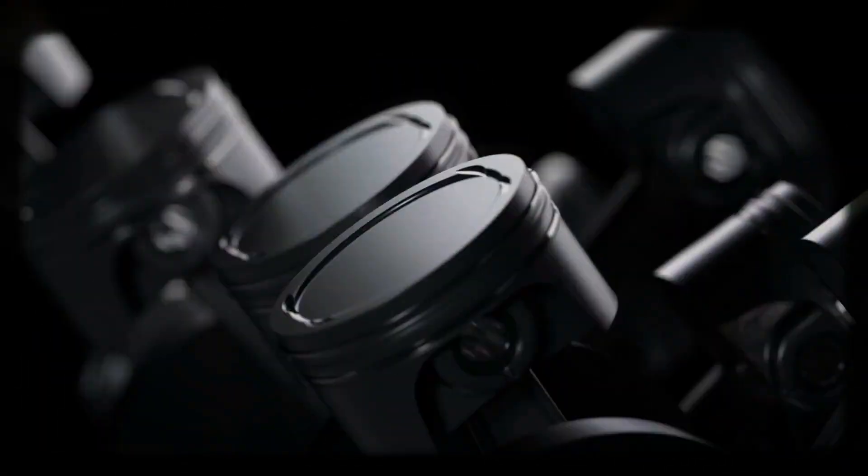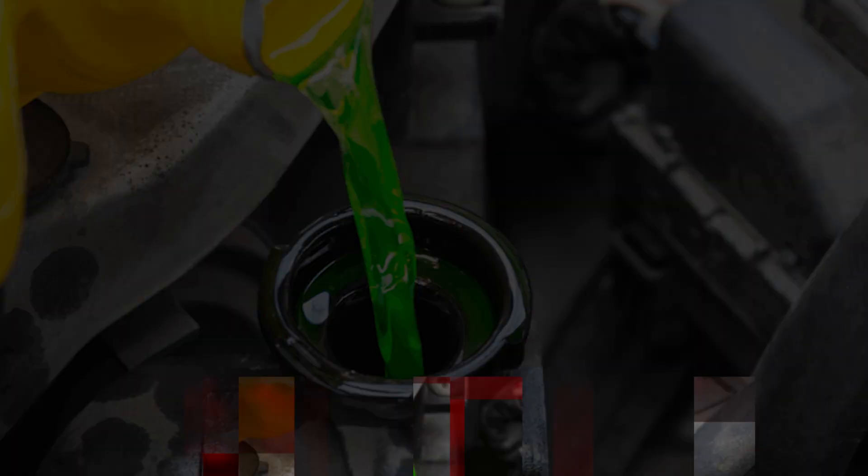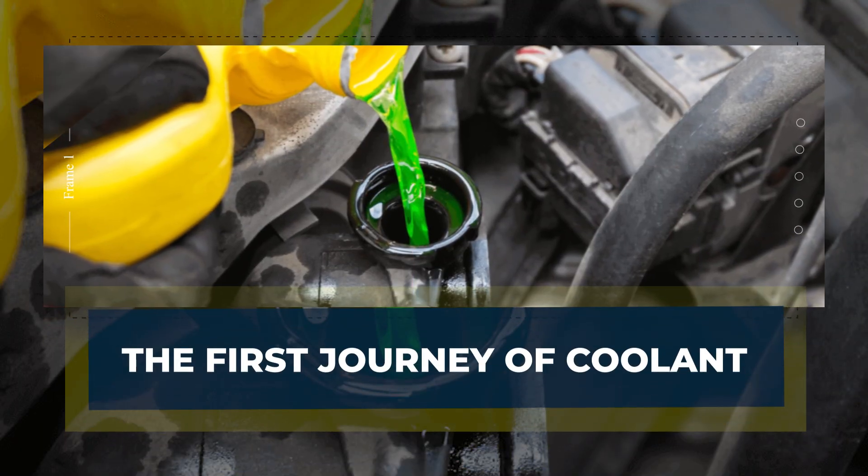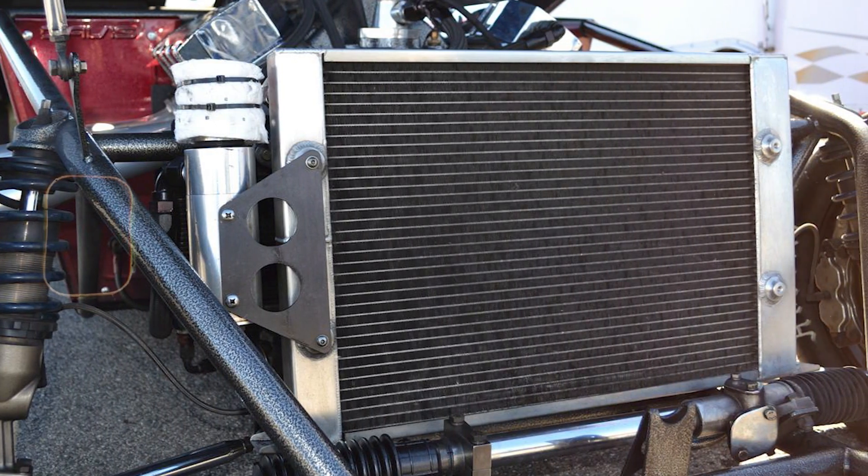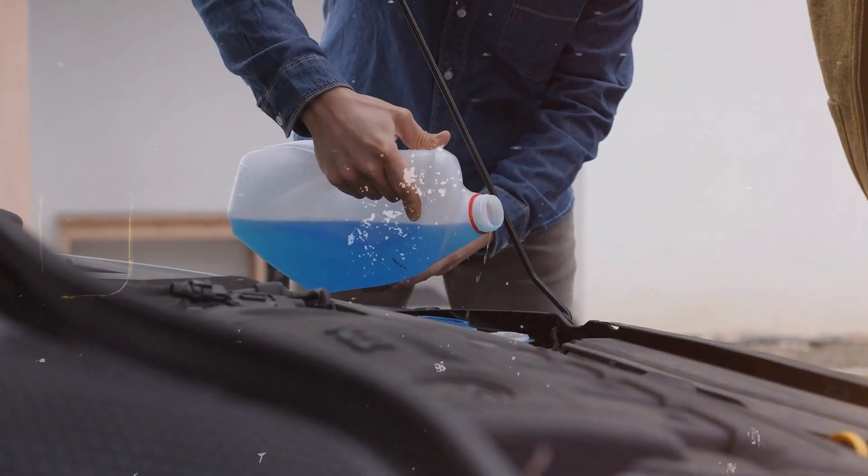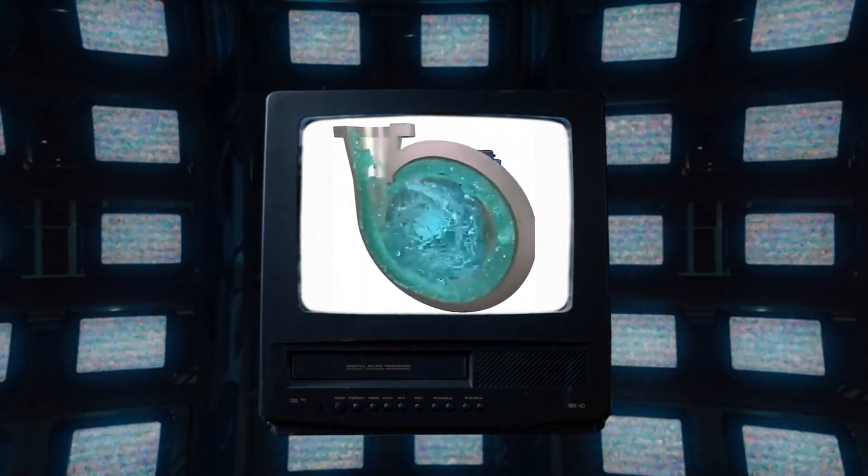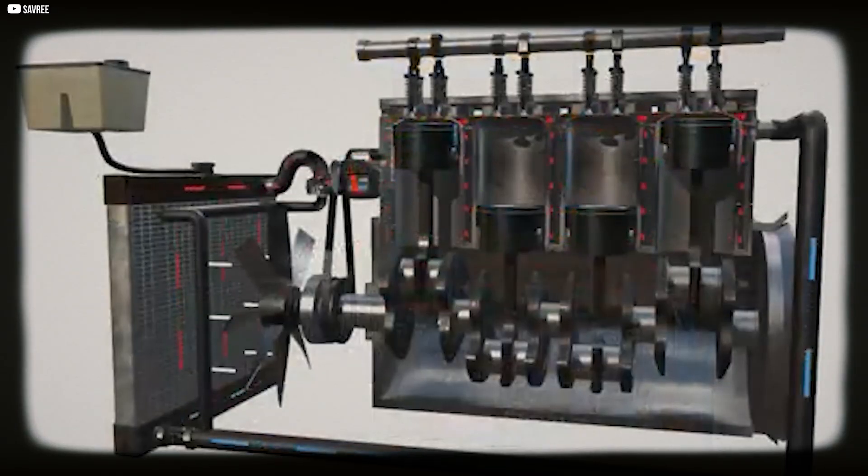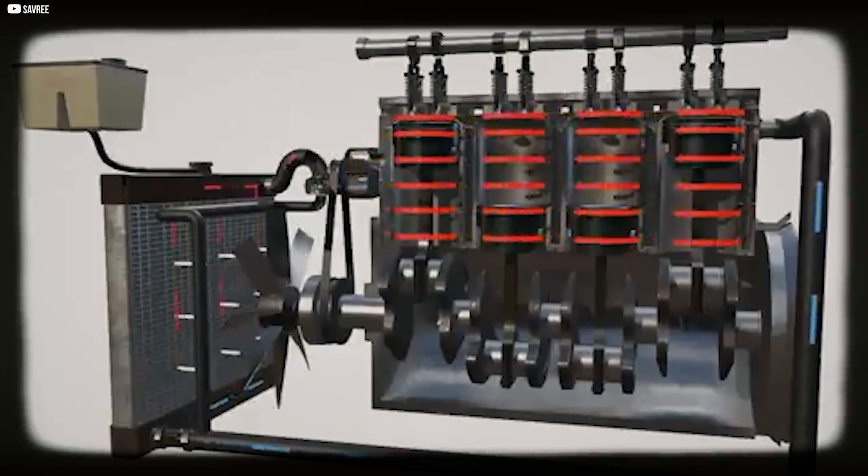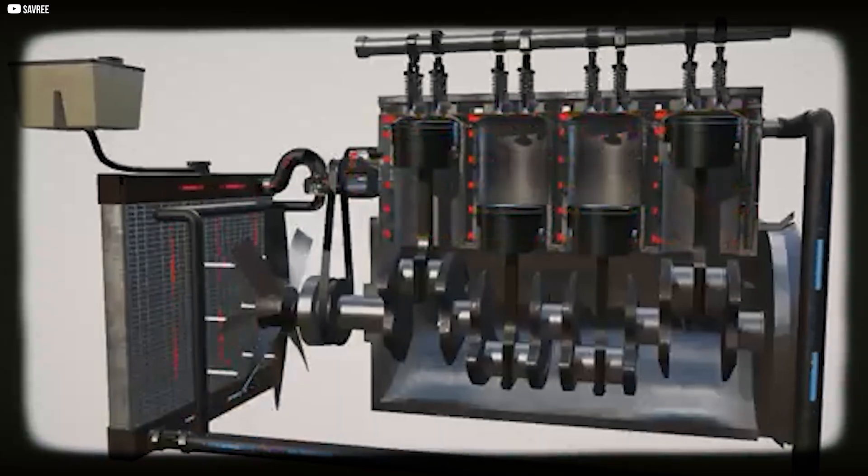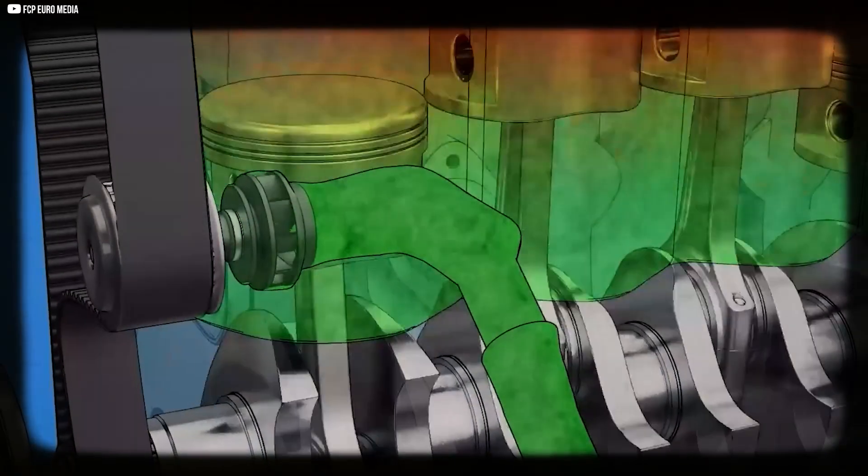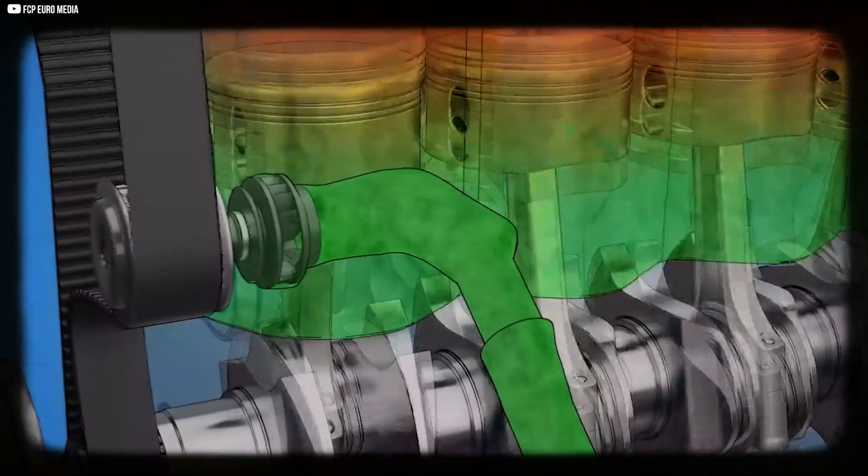The first journey of coolant: the story begins at the radiator, the place where fresh coolant is filled into the system. From here, the circulation pump takes command. Its job is to draw the liquid and send it deep into the block with steady force.